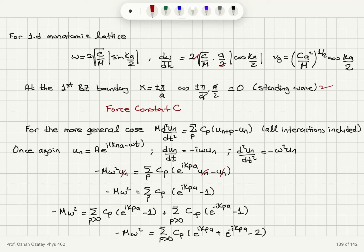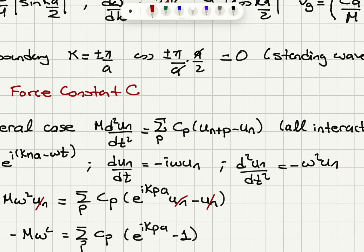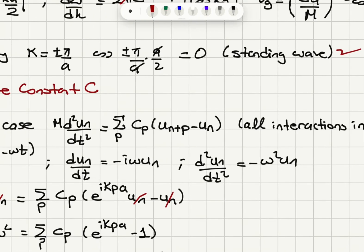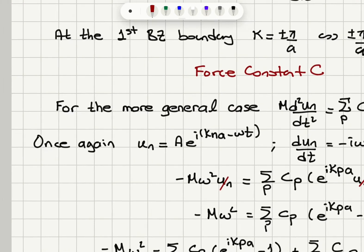For the last part, I want to talk about the force constant c — our spring constant. When we talk about the general case where atoms interact not only with their neighbors but also with further neighbors, we can write the generalized equation of motion as m·d²uₙ/dt² = Σₚ cₚ(uₙ₊ₚ − uₙ). So the displacement from equilibrium of the (n+p)th atom minus the displacement of the atom at position na — this means we are including all interactions here.